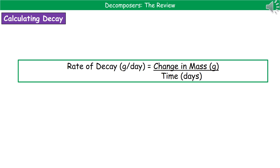At the end of this video, you should be able to state what is meant by decomposition, give examples of decomposers, identify the difference between decomposers and detritivores, give an example of a detritivore, explain how environmental factors affect the rate of decomposition, and calculate the rate of decay.